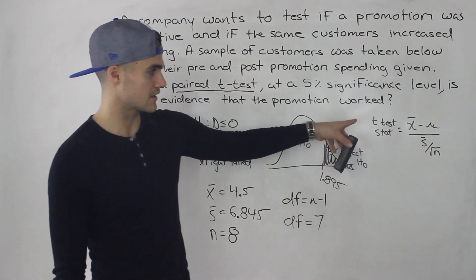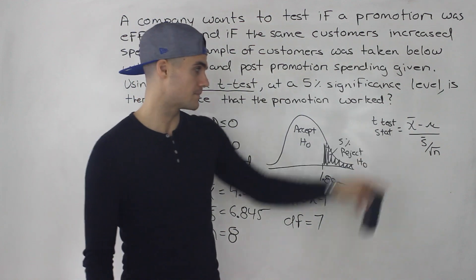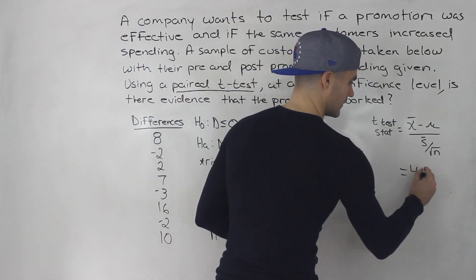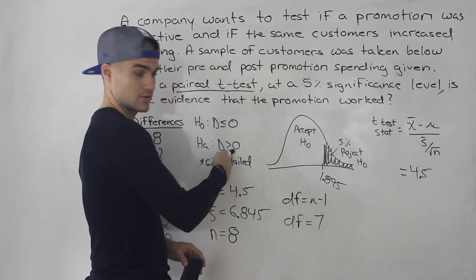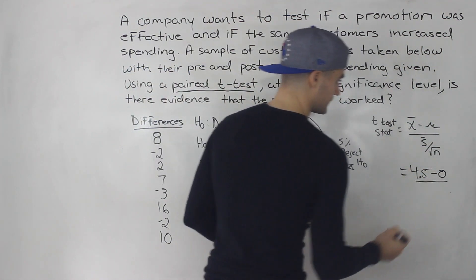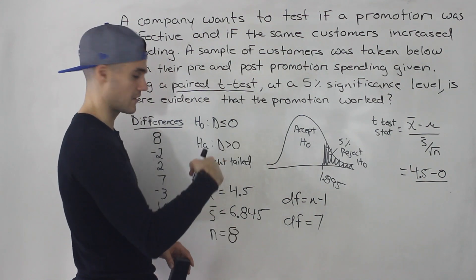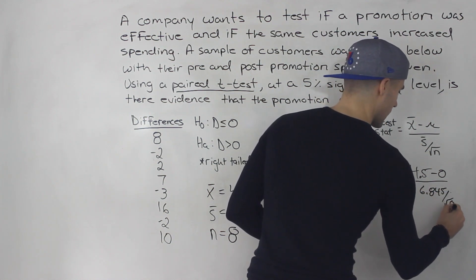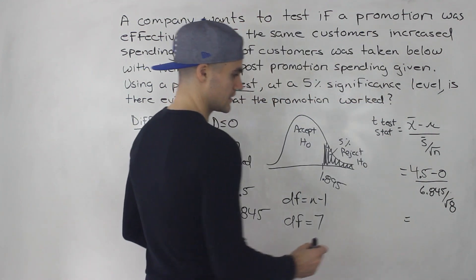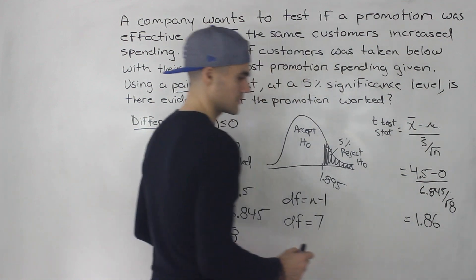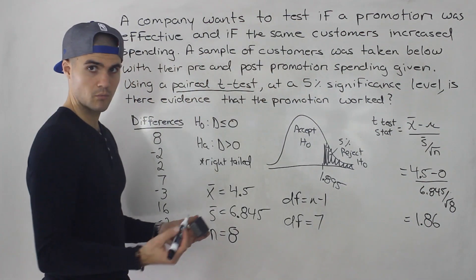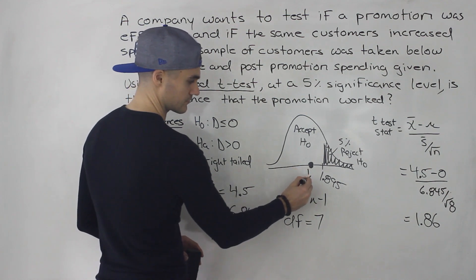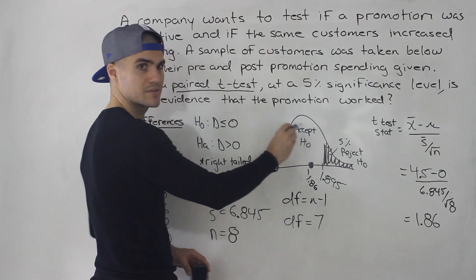Now we find the test statistic using the one-sample t-test formula: t = (x̄ − μ₀) / (s / √n). Here x̄ = 4.5, μ₀ = 0 (the hypothesized value), s = 6.845, and n = 8. So t = (4.5 − 0) / (6.845 / √8) ≈ 1.86. The test statistic 1.86 falls just to the left of the critical value 1.895, placing it in the acceptance region.